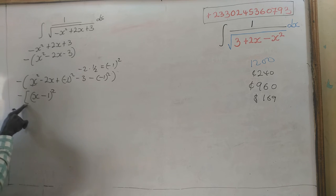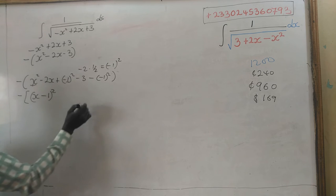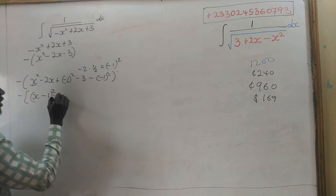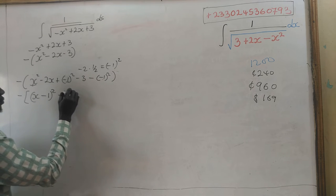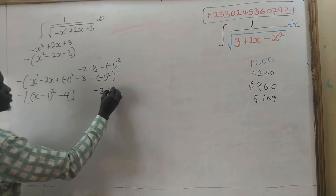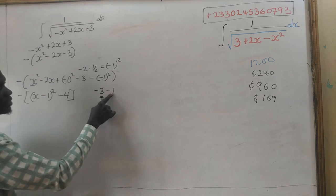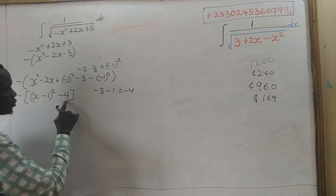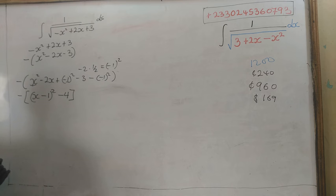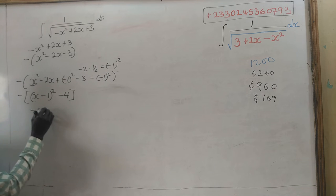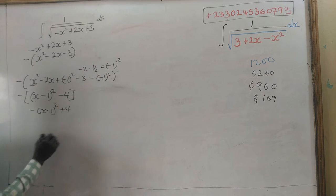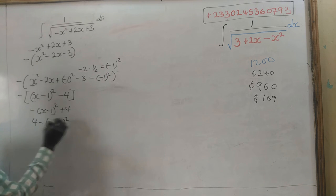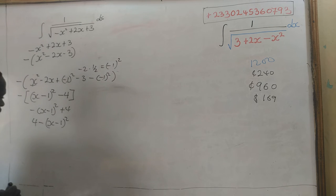Don't forget to bring the bigger bracket because there is a negative sign. Minus 1 squared is positive 1, so minus 3 minus 1 gives us minus 4. So multiplying by the negative sign gives us minus (x minus 1) squared plus 4, which can be written as 4 minus (x minus 1) all squared.